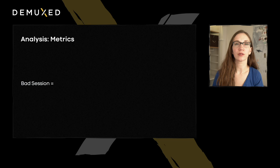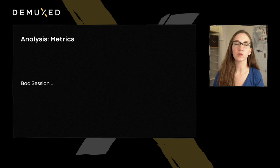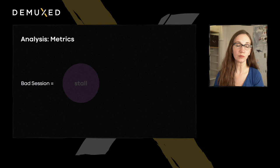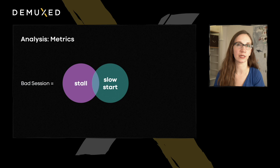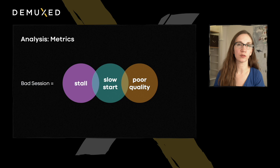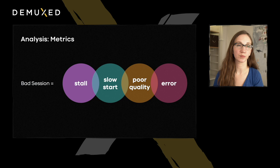The next decision was how we would measure the impact of this work. Like many teams, we have multiple ways to measure the performance of video playback — looking at stalls, initial startup time, and visual quality. For this work, we wanted to specifically look at the concept of a bad session and reduce its prevalence. We decided to mark a session as bad if there is a stall during playback, if the video took too long to start or the user gave up before the video started, if the quality was lower than we would have liked, or if there was an error during playback.